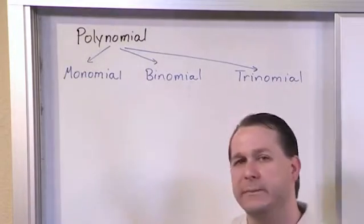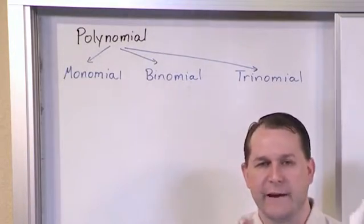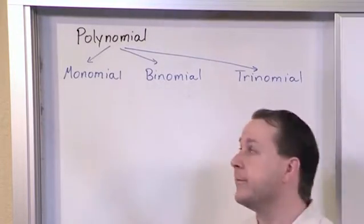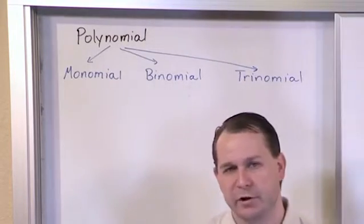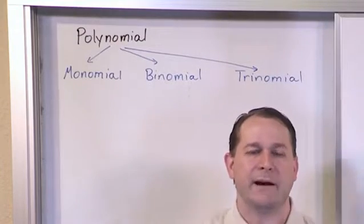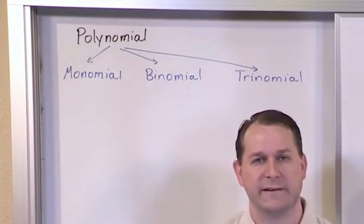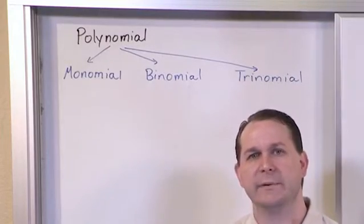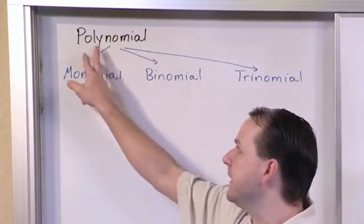Basically, monomials are going to be polynomials that just have one term. Binomials are going to be polynomials that have two terms. And the trinomials are just going to be polynomials that have three terms. And what I mean by term will be very clear when we write some examples down. These words, when you see them in textbooks, really freak students out a lot because they look so different and hard.